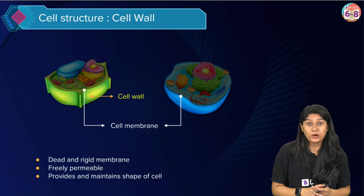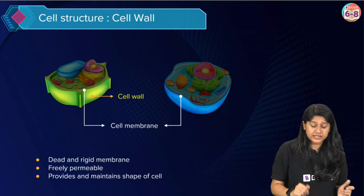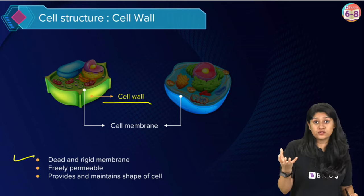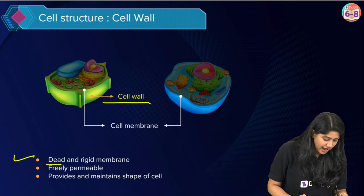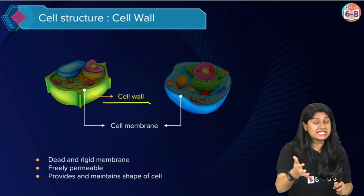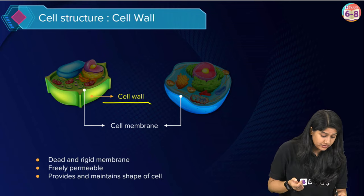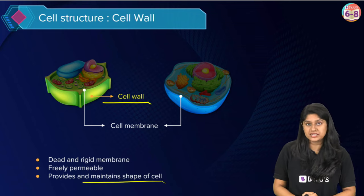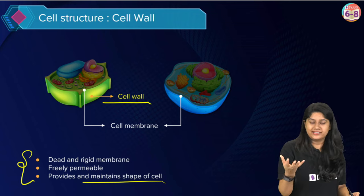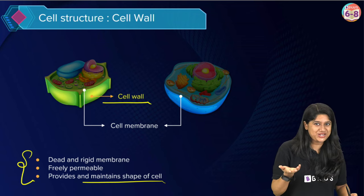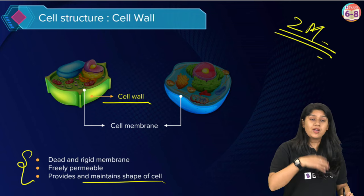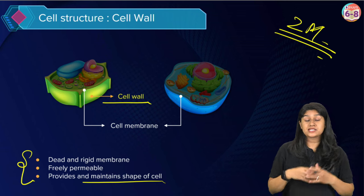Now we will discuss the cell wall. Cell wall is only present in plant cells and not in animal cells. An important characteristic feature of the cell wall is that it is dead and a very rigid membrane. It is freely permeable, meaning all molecules can easily pass through it, and it helps in maintaining the shape of the cell. Please remember these characteristic features as this question can come in your examination.